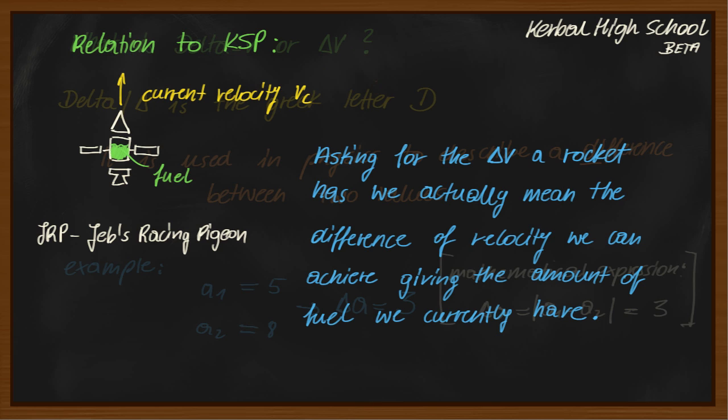Mathematically speaking again, delta v describes the difference between our current velocity and our future velocity vf. This sounds very complicated, but it is far more simple than that. All you basically have to do is add the delta v onto the current velocity and you get the future velocity.